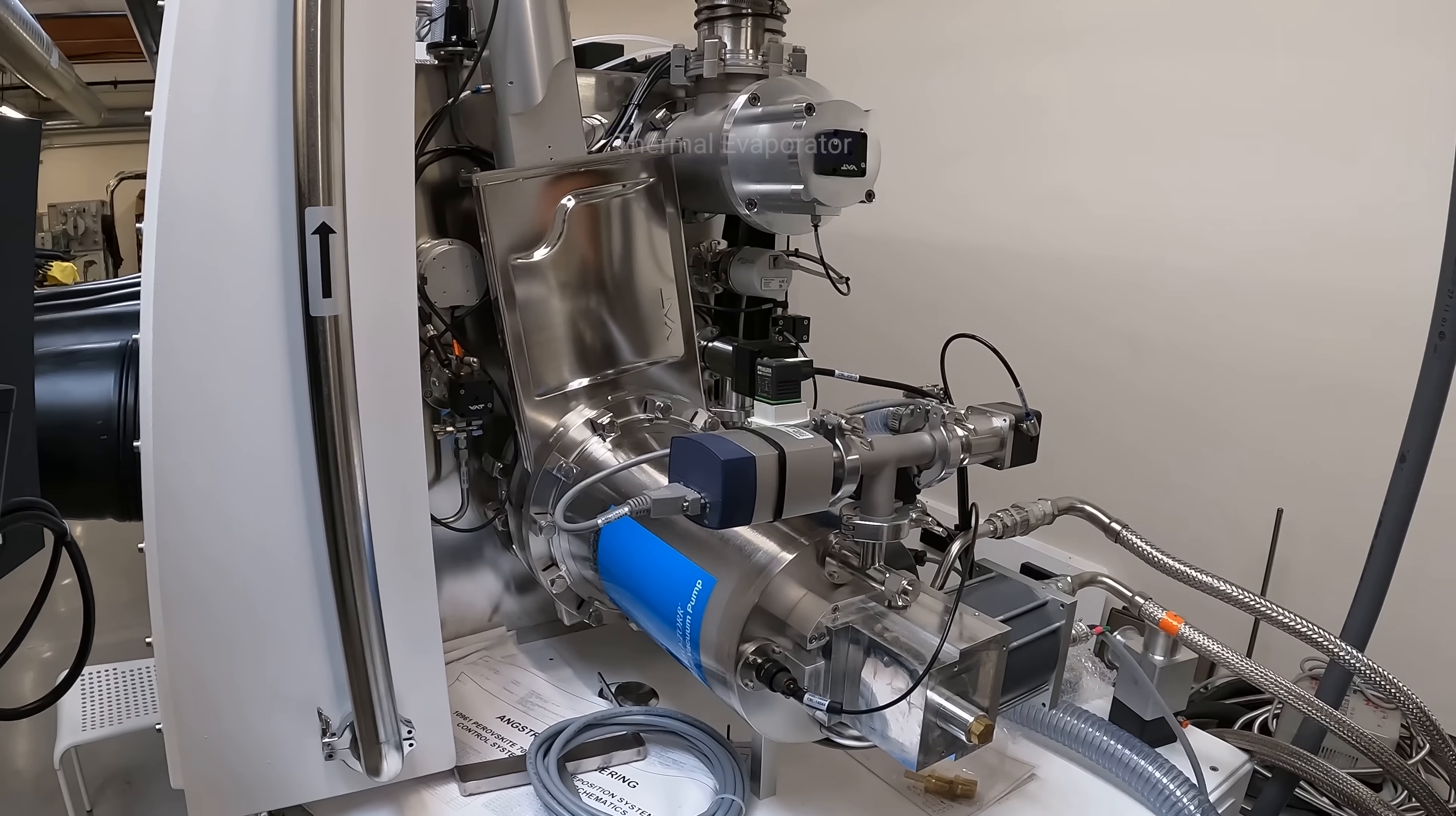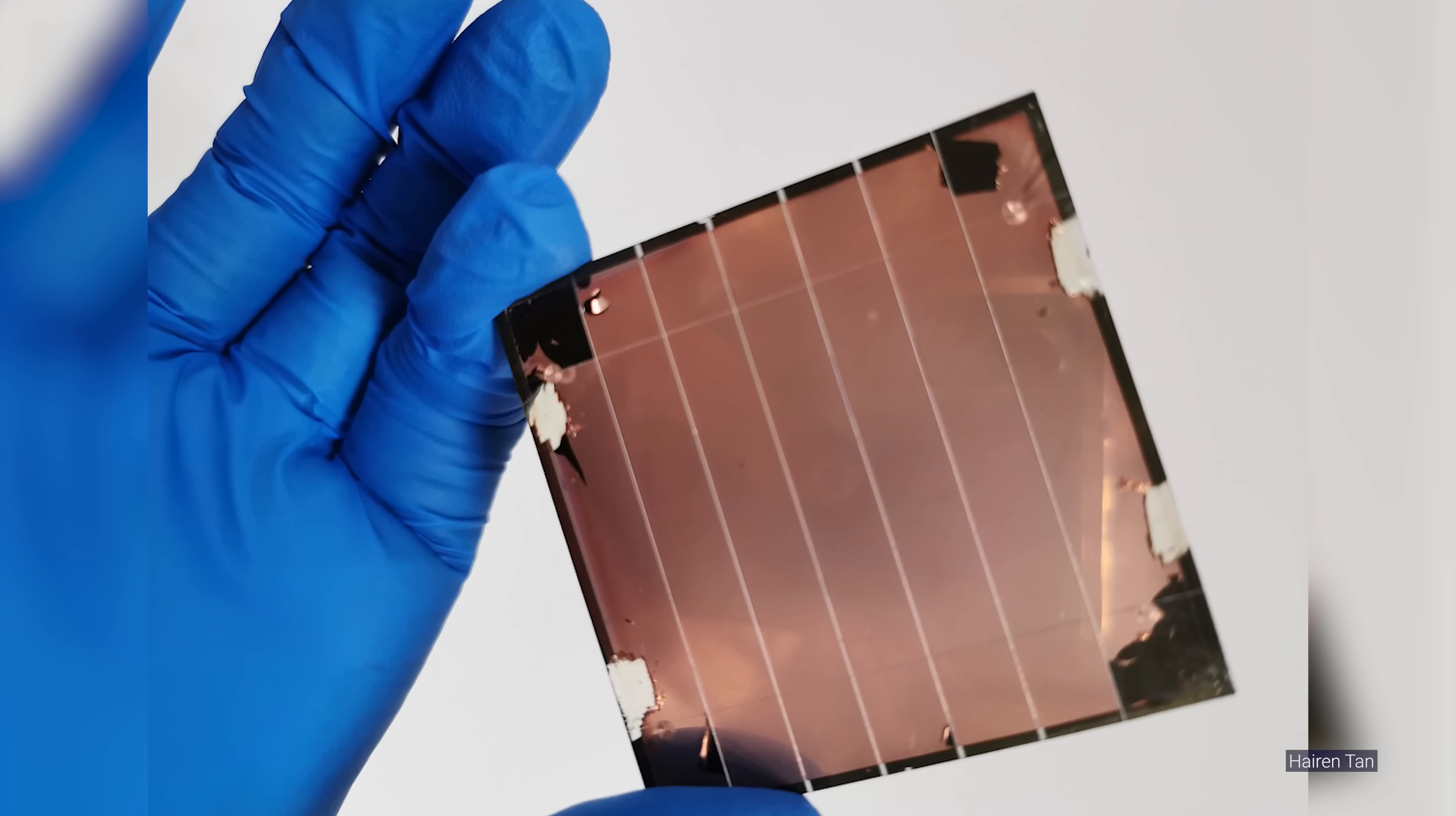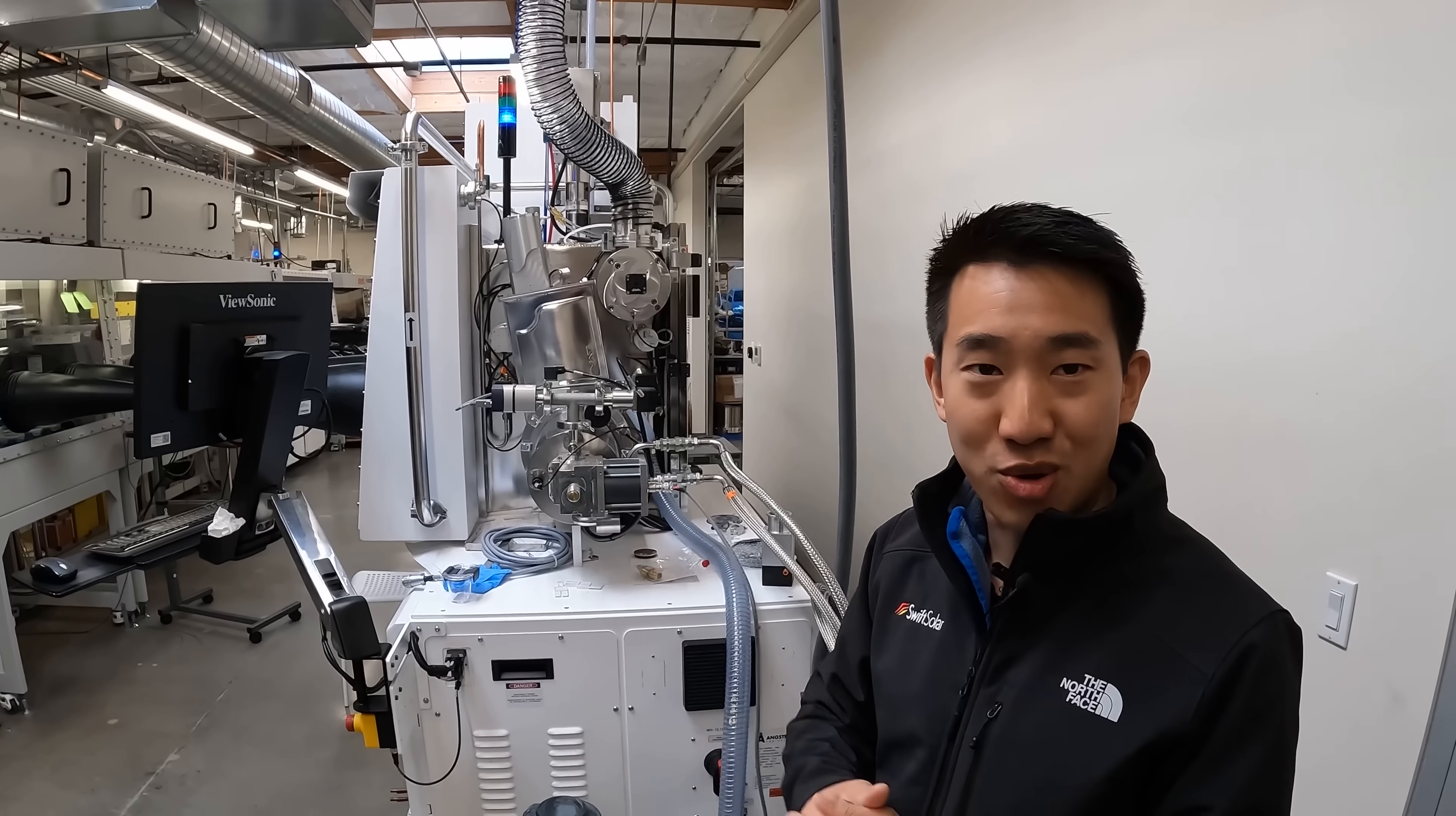So this guy is called a thermal evaporator. It's one of many kinds of deposition tools that we use to put down thin films. When you look at a perovskite solar cell, it's like any other thin film device, like an organic LED or a cadmium telluride solar cell. It's got a lot of thin film semiconductor layers. And one of the ways you deposit some of those layers is using techniques like thermal evaporation.